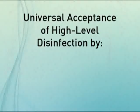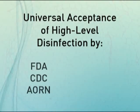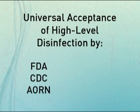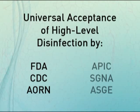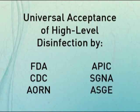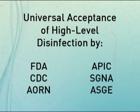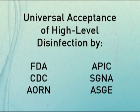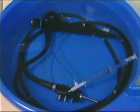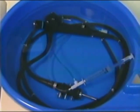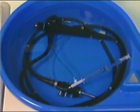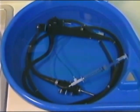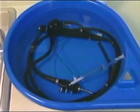These organizations include the FDA, CDC, AORN, APIC, SG&A, and ASGE. High-level disinfection destroys 10 to the 6 of Mycobacterium bovis, the surrogate test organism for Mycobacterium tuberculosis.